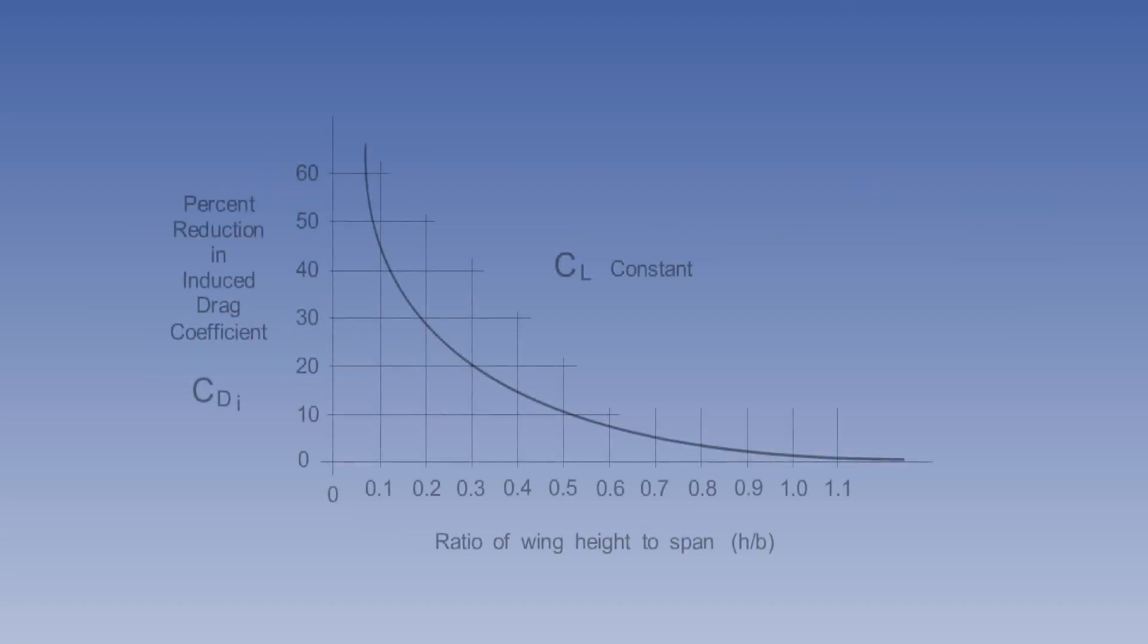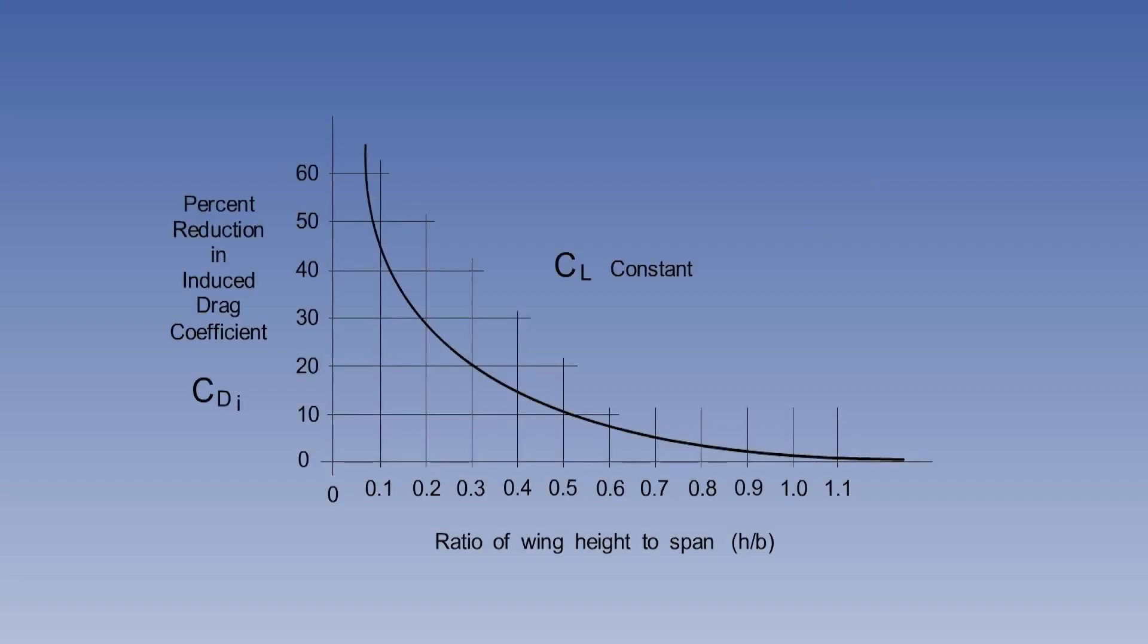The influence of ground effect depends on the distance of the wing above the ground. A large reduction in the induced drag coefficient, CDI, will only occur when the wing is very close to the ground, that is, within about half a wingspan.